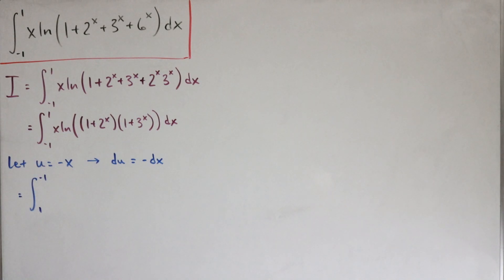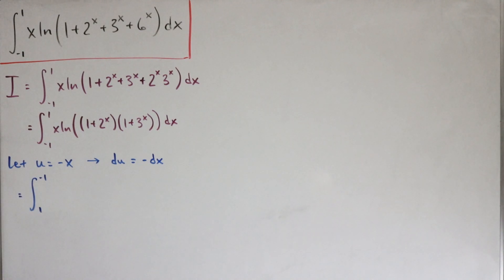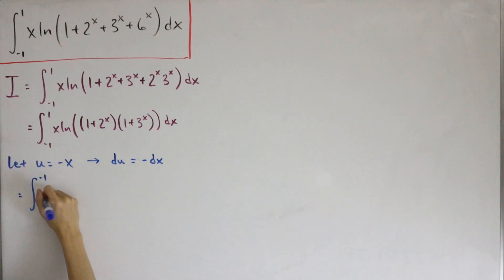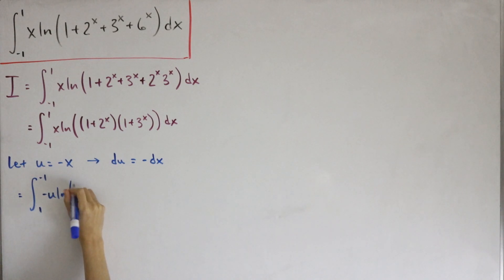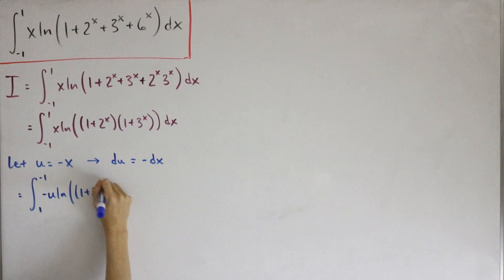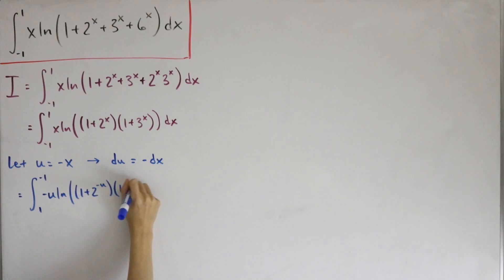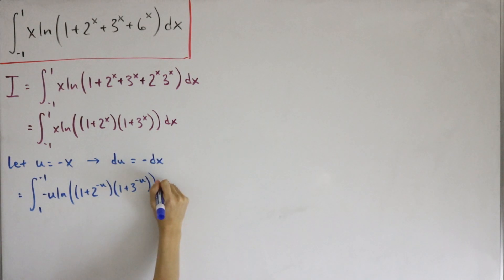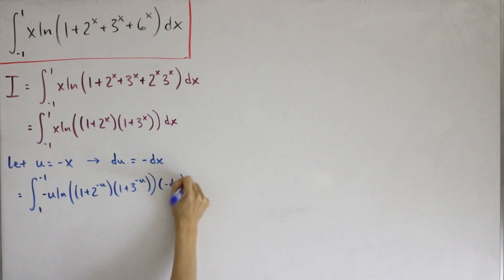After the bound flip and sign change from dx = -du, the negatives cancel. We solve for x = -u to substitute back in. So we have -u multiplied by the natural log of (1 + 2^(-u))(1 + 3^(-u)), then followed by du.